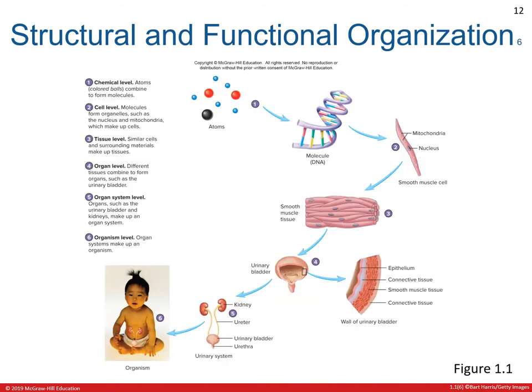Let us now have a review of your structural and functional level organization. Remember that there are six levels of organization: the chemical level, cellular level, tissue level, organ level, organ system level, and the organism level.